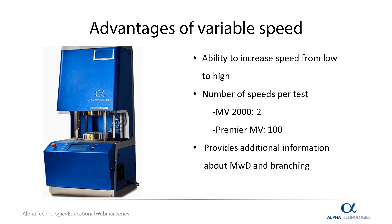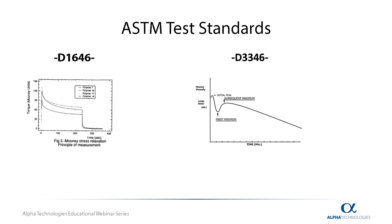This dynamic test will provide extra information about the shear thickening and thinning of a material as well as molecular weight distribution and polymer chain branching. The Premier Series Mooney viscometer adheres to two main American Society of Testing and Measurement standards: ASTM D1646 and D3346.